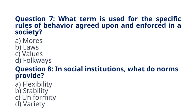Question 7. What term is used for the specific rules of behavior agreed upon and enforced in a society? A. Mores. B. Laws. C. Values. D. Folkways. The correct answer to question 7 is option B, Laws. Explanation: Laws are specific rules of behavior agreed upon and enforced in a society.